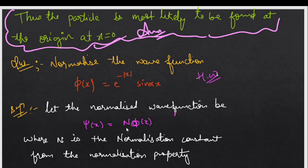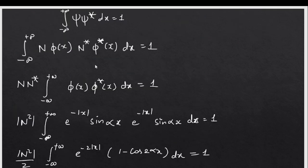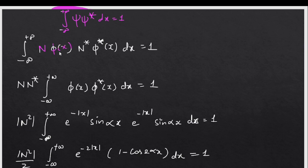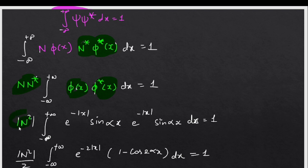We take the normalization condition: the integral of psi-star times psi dx equals 1. This gives us N times N-star, and then the integral of phi(x)·phi-star(x) dx equals 1, which means mod of N squared times the integral equals 1.